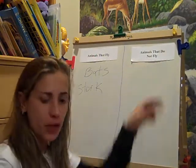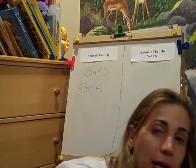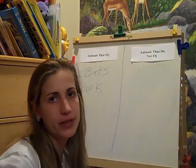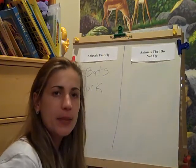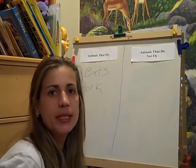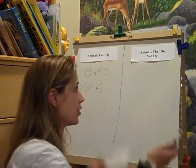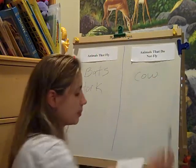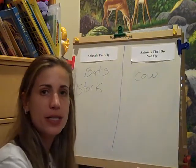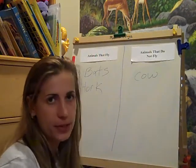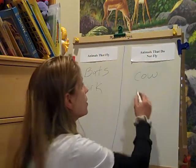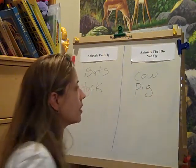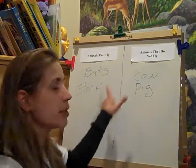Animals that do not fly. Again, I would have my backup cards in case they couldn't come up with an animal, but I'm sure they could at this level. 'Can anybody name an animal that does not fly?' Let's just say they said cow — I would write cow in this column. I would then ask the next student, and let's say pig. The pig does not fly. I would go on with the lesson until I filled the columns up.